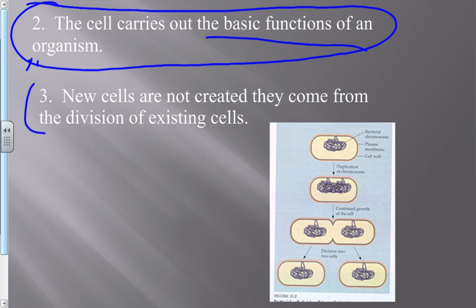The third point: new cells are not created from scratch — they come from the division of existing cells. There is no cell factory in your body pumping out cells. All of the cells that make you up right now came from one cell. That fateful day when sperm met egg to make you, that was one cell — called a zygote. Every one of the trillions of cells in your body came from that single cell, dividing over and over again during the nine months you were in utero, eventually developing into a baby. That's how you heal and grow — your cells divide and make more of you.